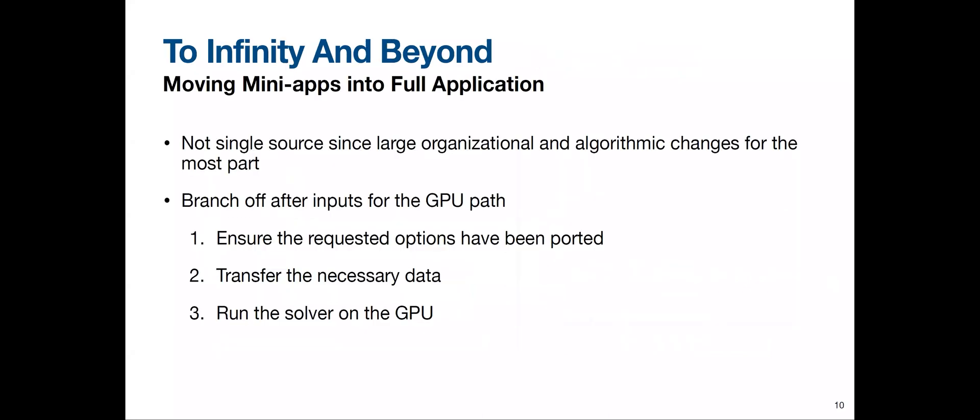Based on our mini app experience, we want to move these lessons and performance into the full application. Because we had to make many organizational and algorithmic changes, we were not able to keep a single source between the CPU path and the GPU path. After reading in all inputs, we branch off to the GPU path, ensure the required options have been ported, transfer the necessary data, and then run the solver on the GPU. There is some code reuse for smaller routines, but for the most part we had to rewrite those functions.